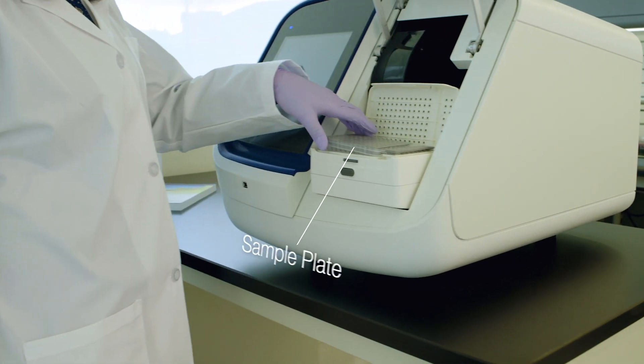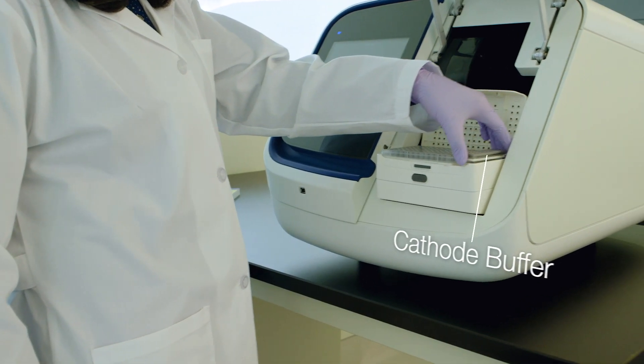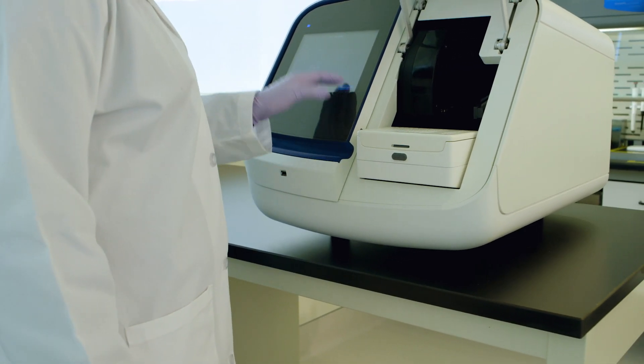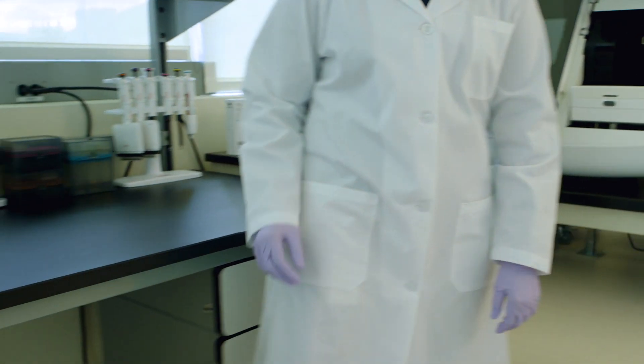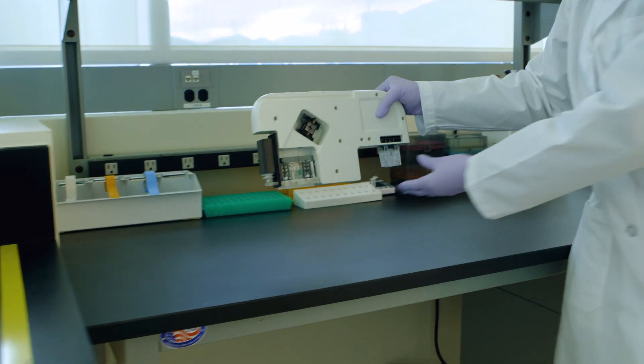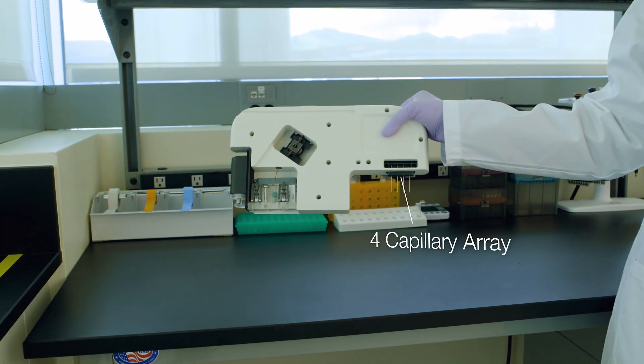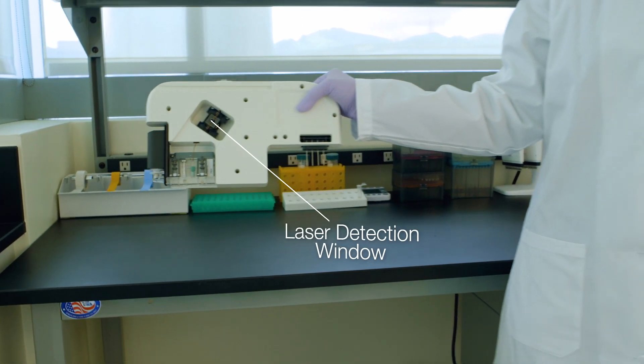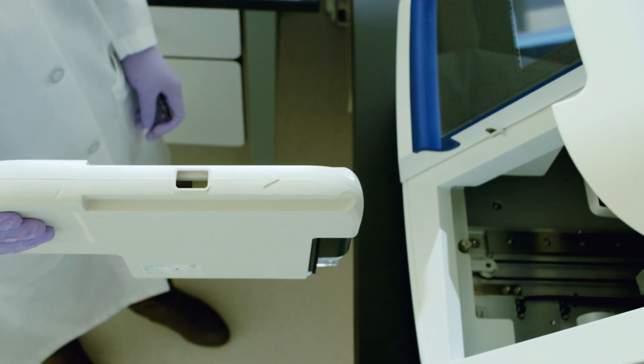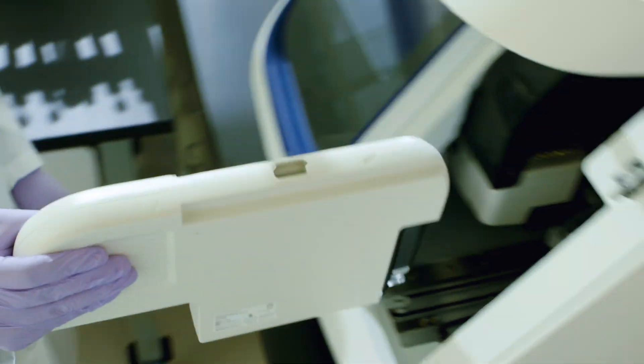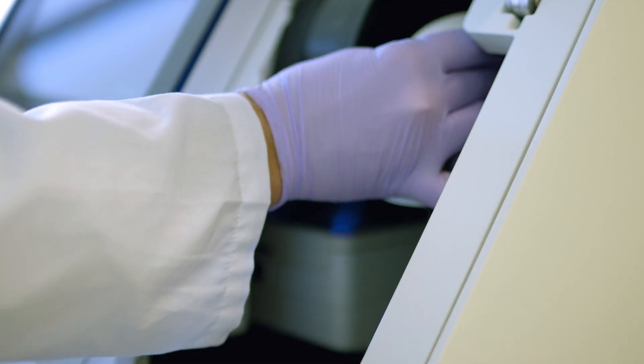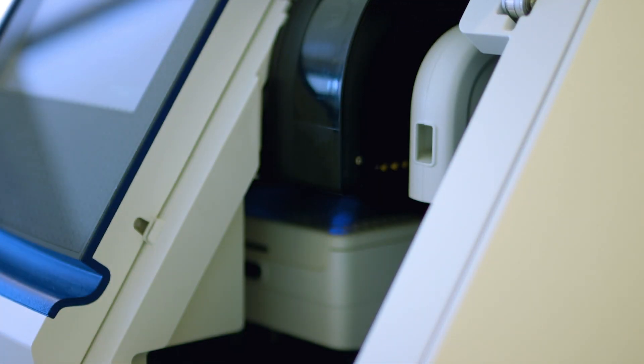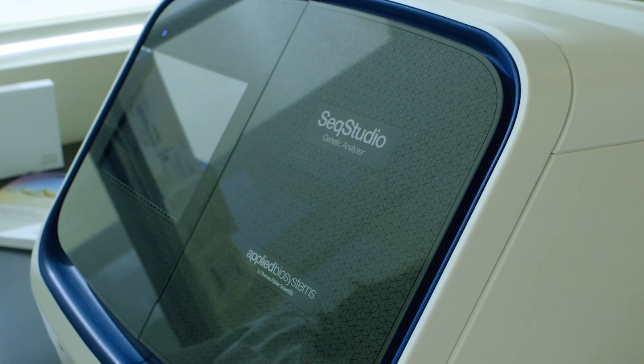Insert the sample plate, cathode buffer, and the cartridge. This includes everything you need: the capillaries, anode buffer, polymer delivery system, pop-one polymer, and the laser detection window. One simple step with no fussy capillaries—it clicks right in.